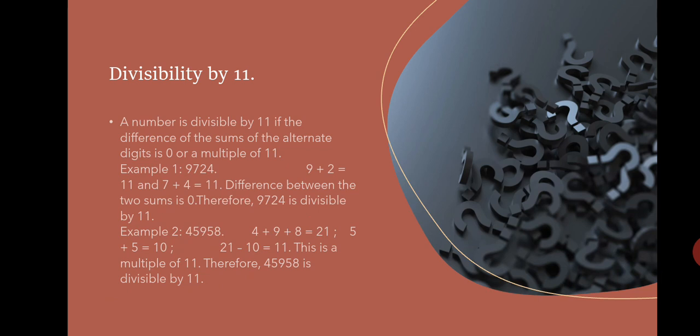For example, 9724. For the alternative number, for 9 is 2 and for 7 the next alternative is 4. When we add 9 + 2 you will get 11, and 7 + 4 = 11. When we subtract the sum of the two digit groups we will get 0, that is 11 - 11 = 0. Therefore, 9724 is divisible by 11.